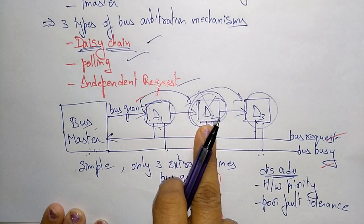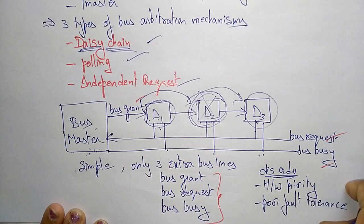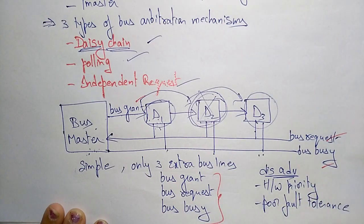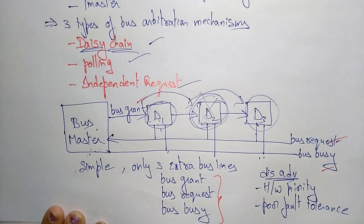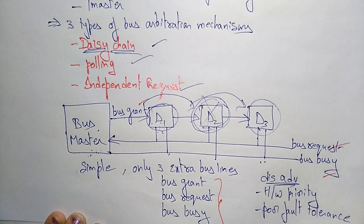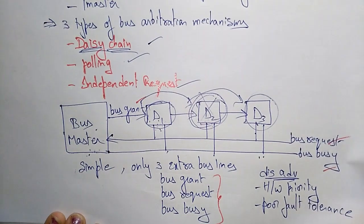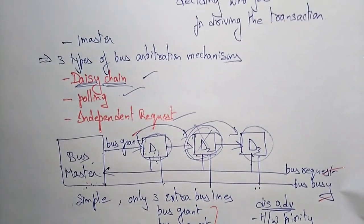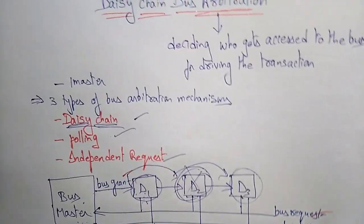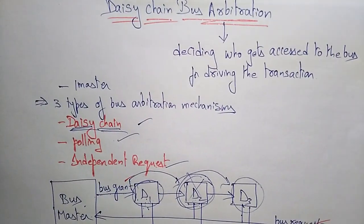So if one device fails, the next priority device will not be able to access the bus facility. This is the daisy chain arbitration. Thank you.